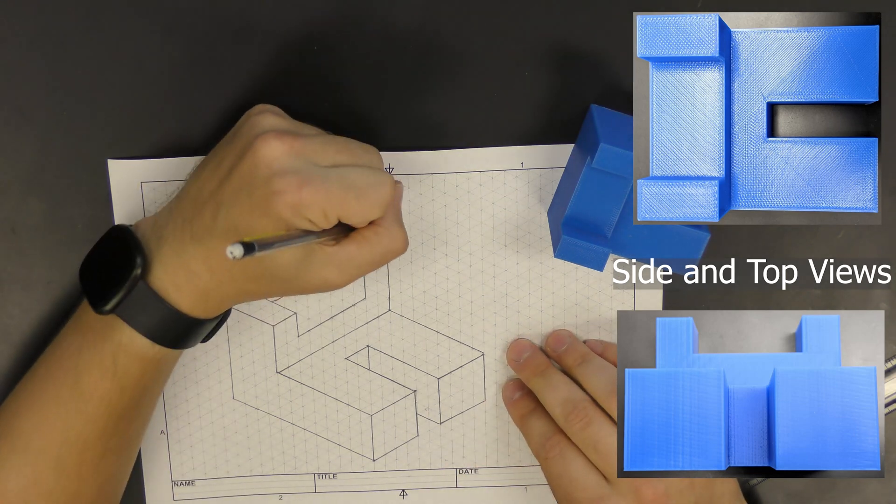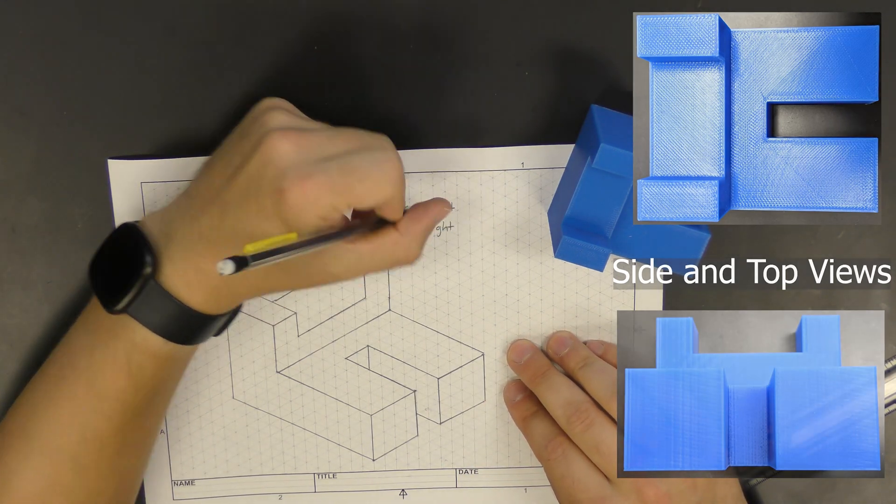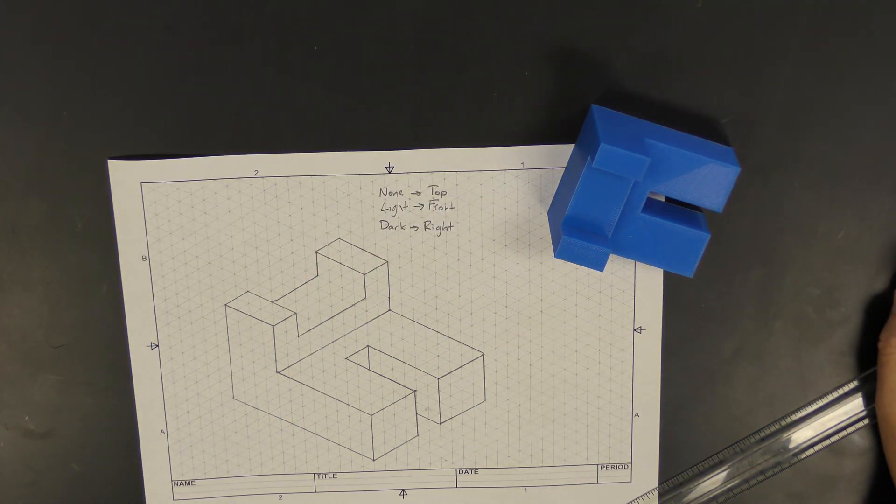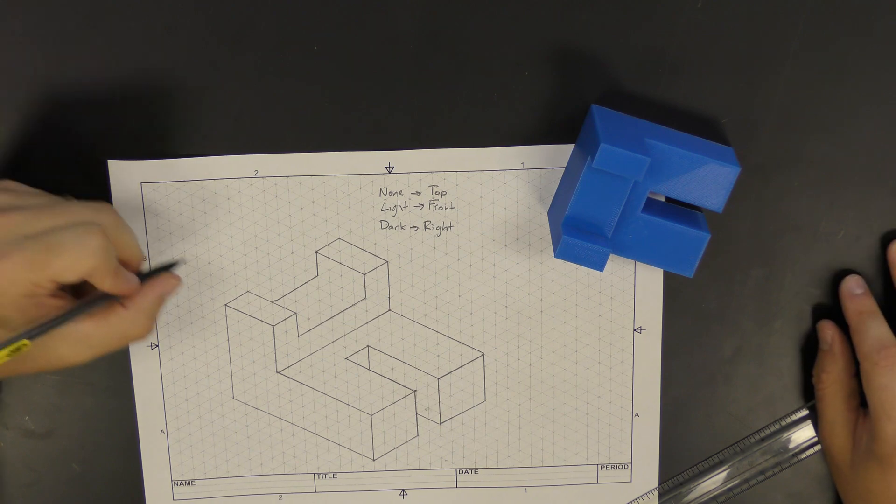The next thing we're going to do is apply shading. When we apply shading, we use three color schemes: on top there is no shading, on the front there is very light shading, and on the right side there is dark shading.